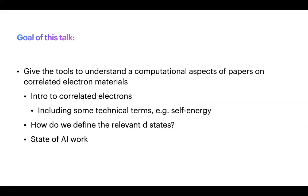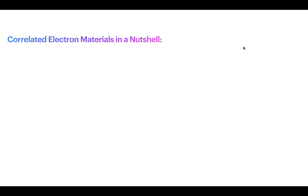The goal of this talk is to give you the tools to understand computational aspects of papers that look at correlated electron materials. There's an introduction to what correlated electron materials are, as well as technical terms you'll see in papers — things like self-energy and quasi-particles — how we define relevant d states, and a discussion of AI and machine learning work to discover new materials.